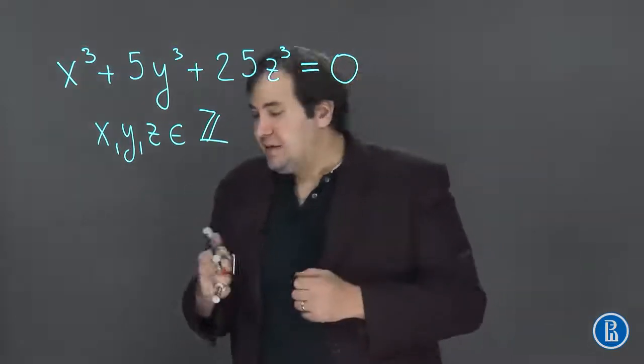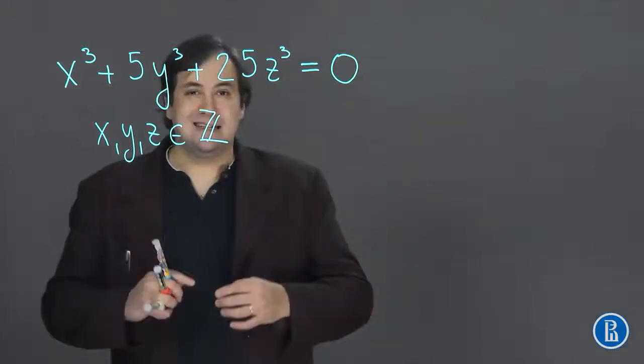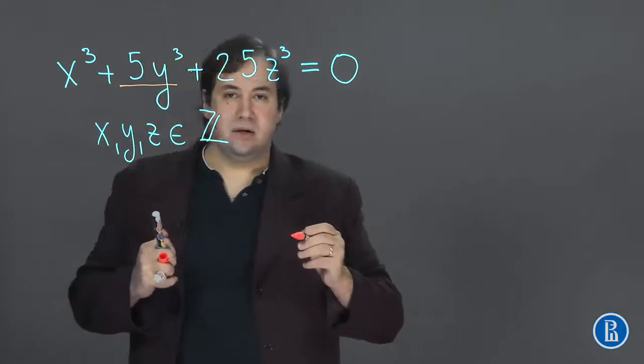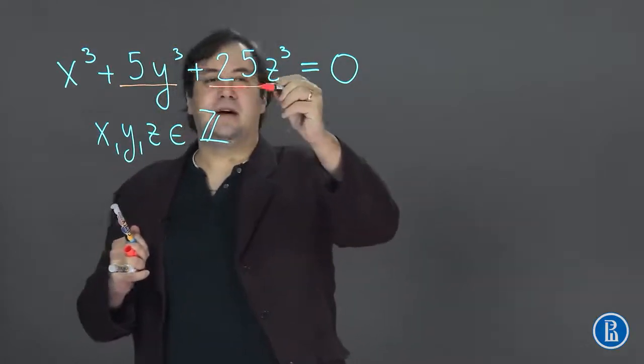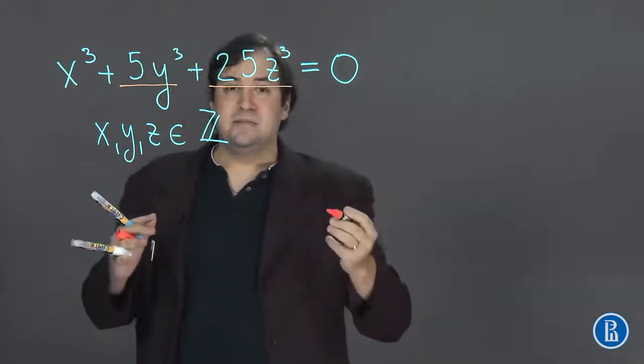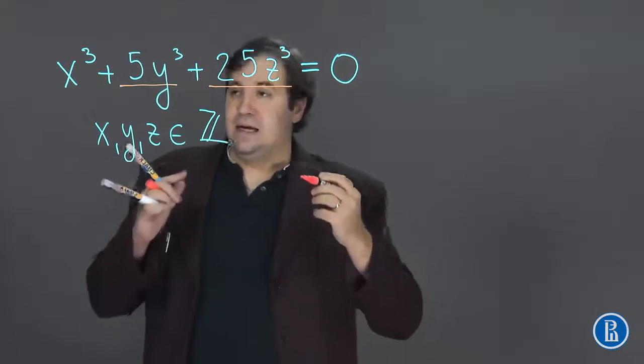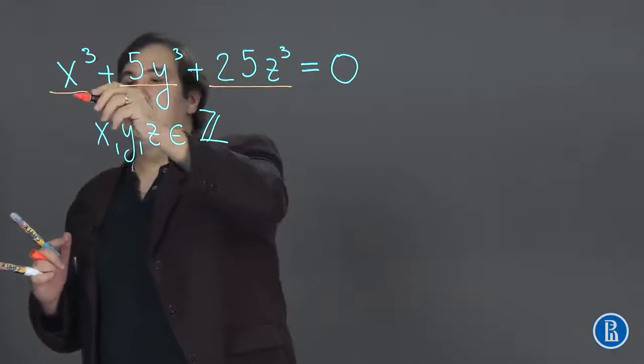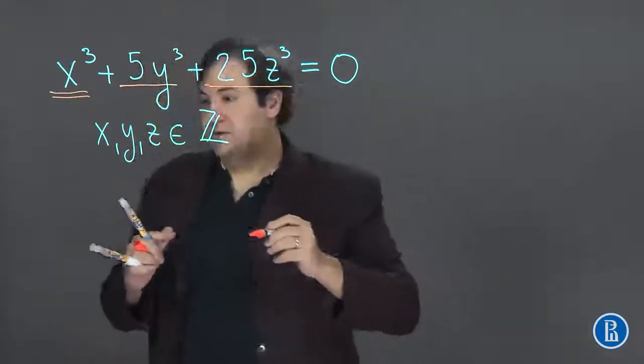Where do we start if we want to solve this equation? I believe that the first thing we need to notice is that both 5y³ and 25z³ are divisible by 5. Therefore x³ must also be divisible by 5.